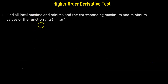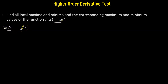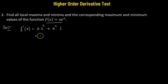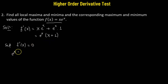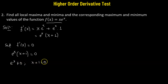Problem 2: determine the local maxima and minima for f(x) = x·eˣ. We take the derivative using the product rule: x times eˣ plus eˣ times 1, which gives eˣ(x + 1). Setting f'(x) = 0: eˣ(x + 1) = 0. Since eˣ cannot equal zero, we need x + 1 = 0, giving us the critical point x = negative 1.